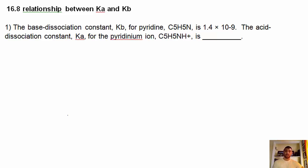Problem one: the base dissociation constant Kb for pyridine, given by that formula, is 1.4 × 10^-9. The acid dissociation constant Ka for the pyridinium ion is blank. Well, there's a simple equation that we've got to know. It's Ka times Kb has to equal Kw.